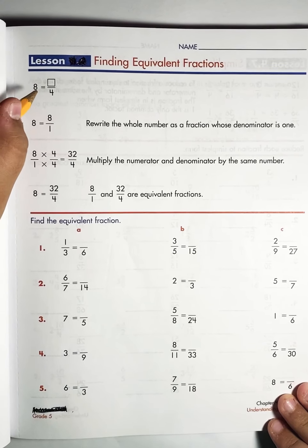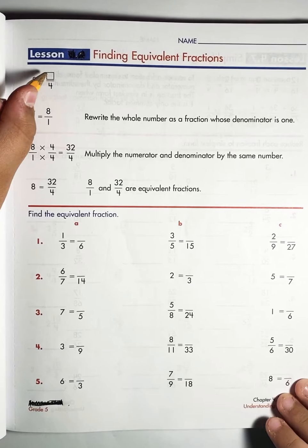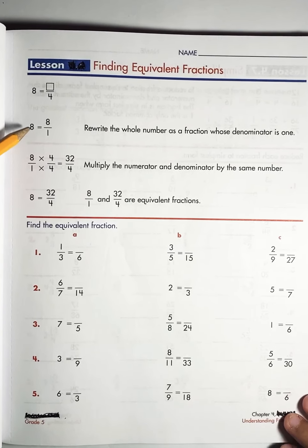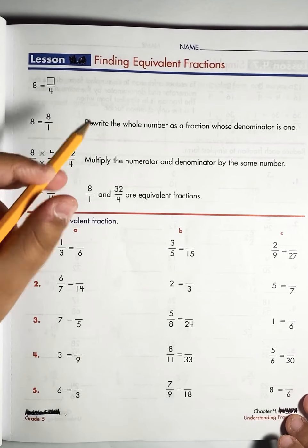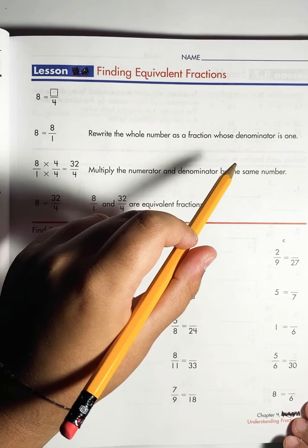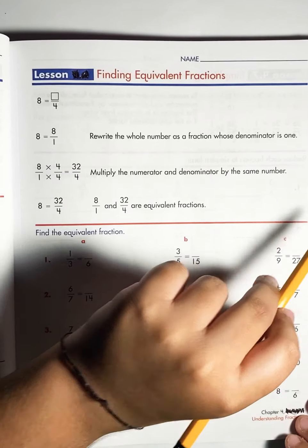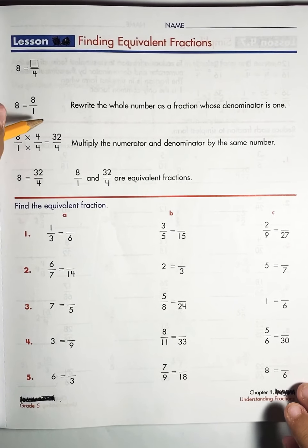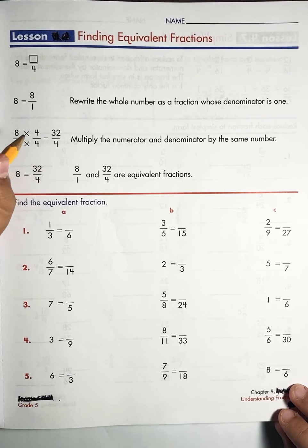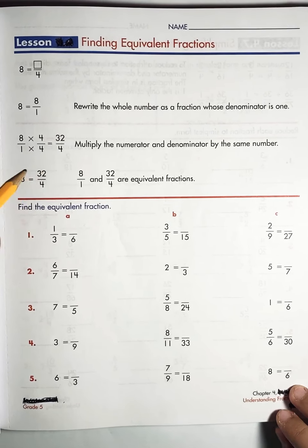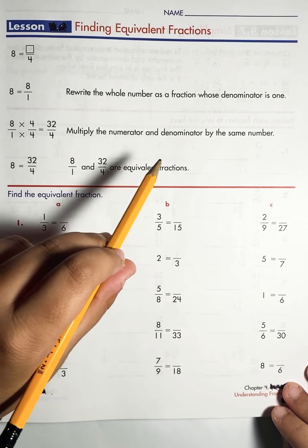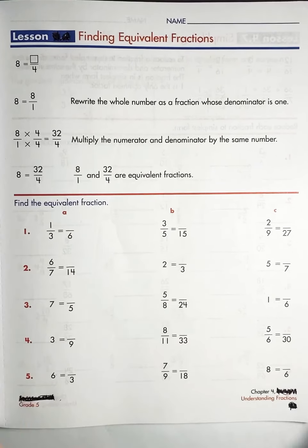Eight whole number equals blank fours. So here let's see, eight equals one eighth. Rewrite the whole number as a fraction whose denominator is one. So it's eight ones. Now over here, eight ones times four fours equals thirty-two fours. Multiply the denominator and the numerator by the same number.